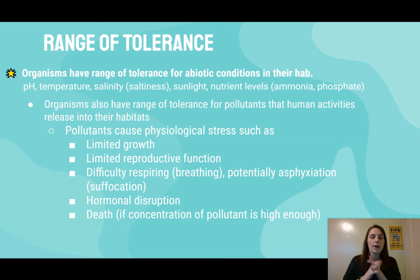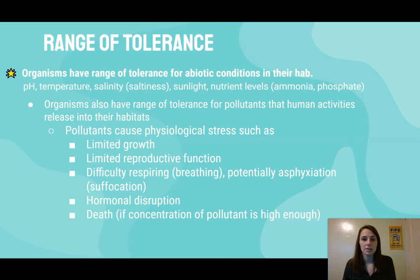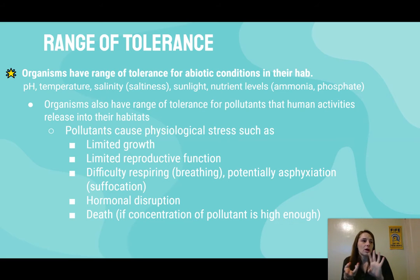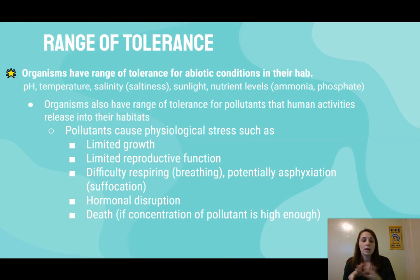An FRQ tip: when you are talking about pollutants and the effects they have on organisms, you want to make sure you're very specific. You don't want to just say they harm organisms — you need to say what specifically is going to happen. This list gives a good awareness of what can happen when organisms are outside their range of tolerance due to pollutants. They can cause physiological stress such as limited growth, limited reproductive function, and difficulty breathing — especially think of fish and their gills. It can also lead to potential asphyxiation where they actually suffocate from pollutants, hormonal disruptions, and death.